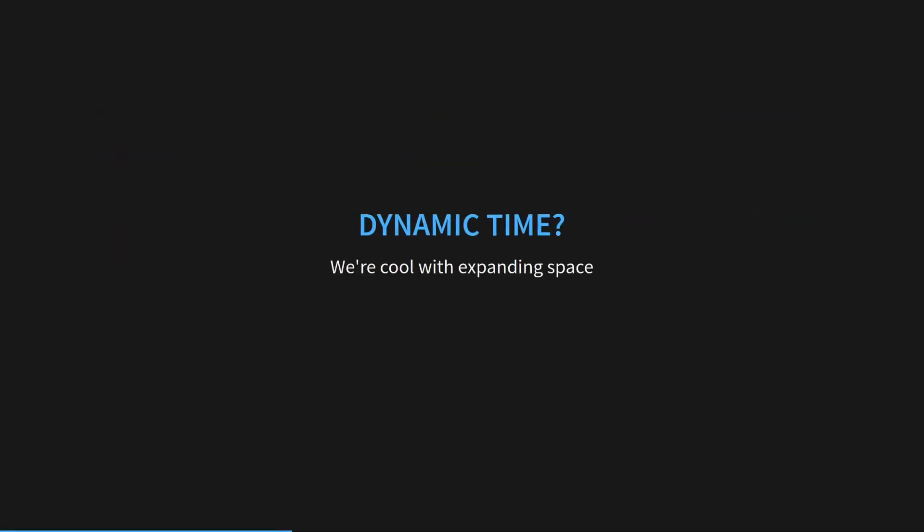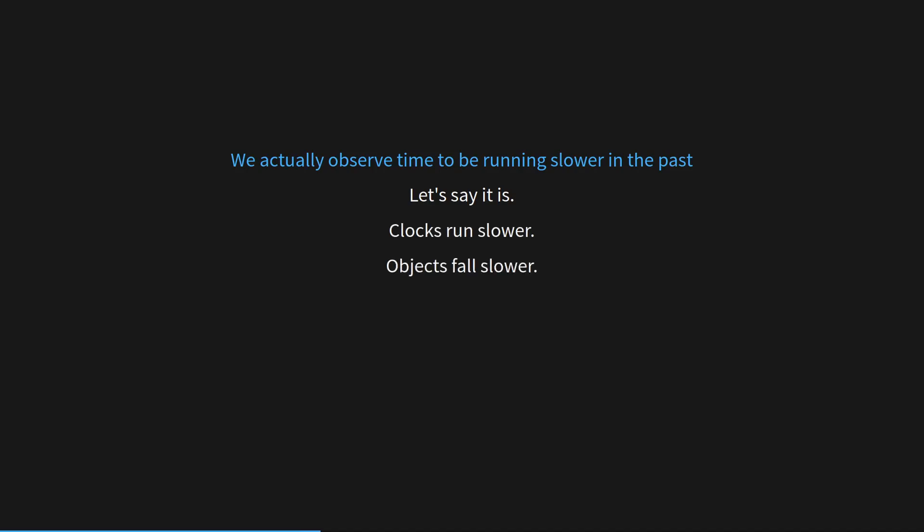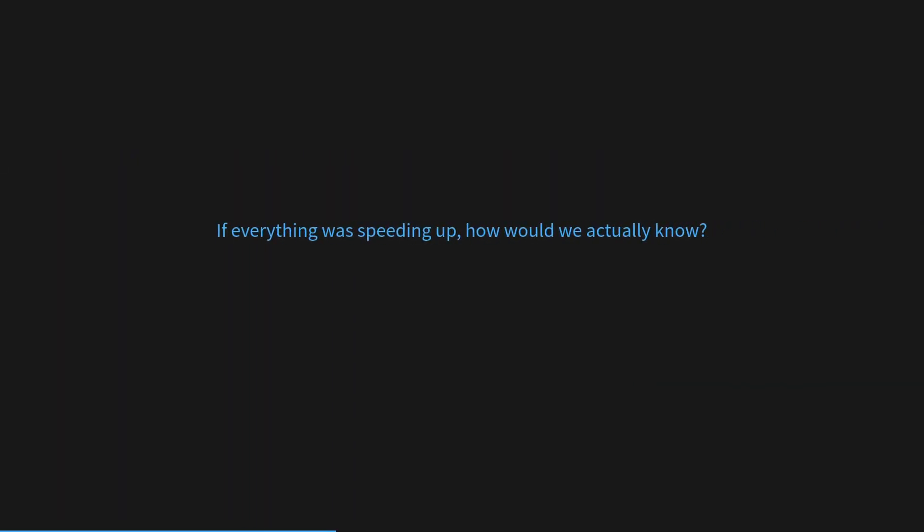Dynamic time? Well, we're cool with expanding space. Why can't we be cool with expanding time? We actually observed time to be running slower in the past. Let's say it is. Clocks run slower. Objects fall slower. Chemical processes are slower. Nuclear decay is slower. And light is slower. If everything was speeding up, how would we actually know?